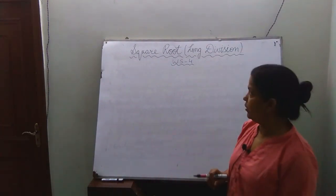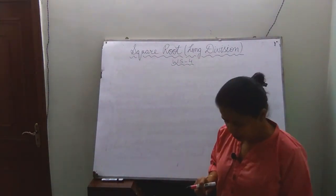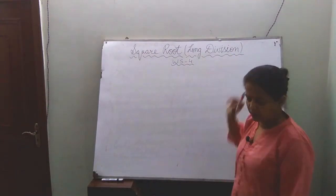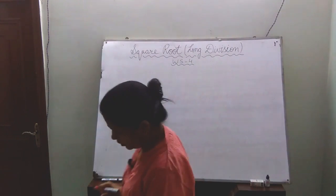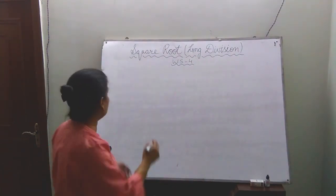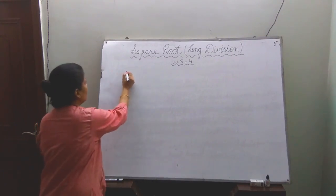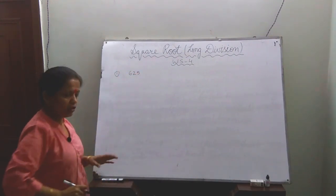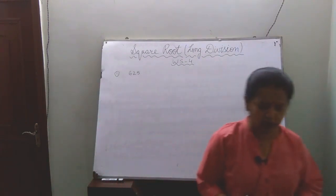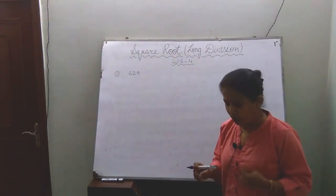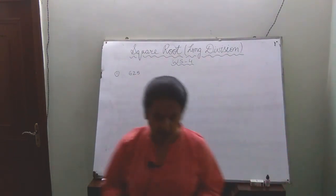Good morning students. Today we will take another method to find out the square root — that is the long division method. Before we take the concept of this method, I am going to work through one easy example. Suppose the number is 625. Its square root you know very well, but we will try to find out the answer by long division method. Let's have a look.